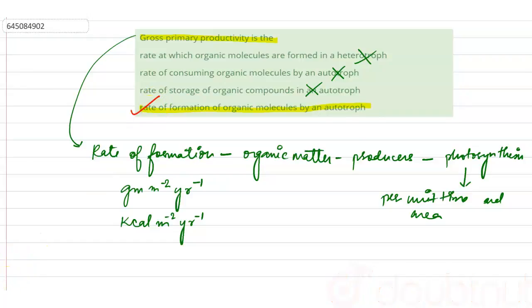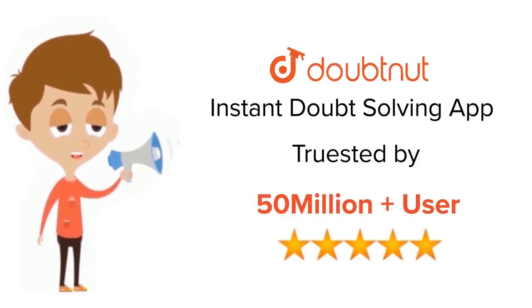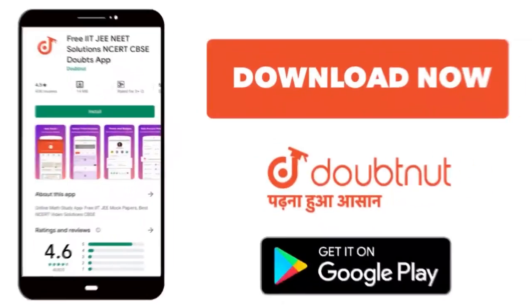The rate of formation of organic molecules by an autotroph, okay? This option is absolutely correct. So correct option is option number four. For class 6 to 12, IIT, JEE, and NEET level, trusted by more than 5 crore students. Download Doubtnut app today.